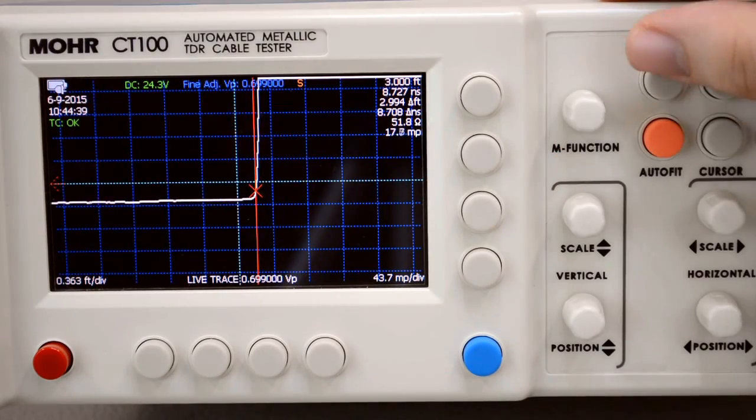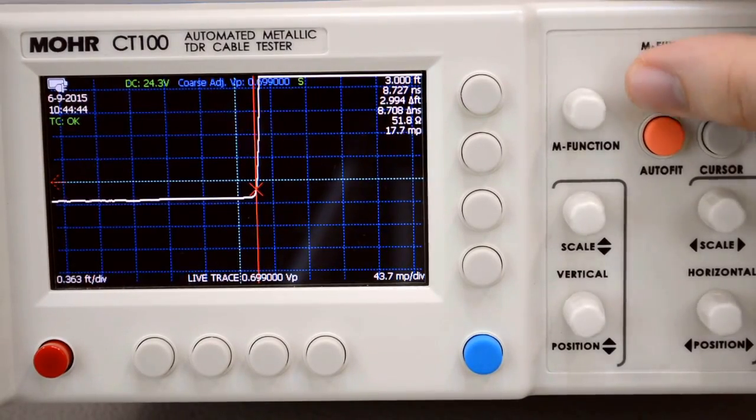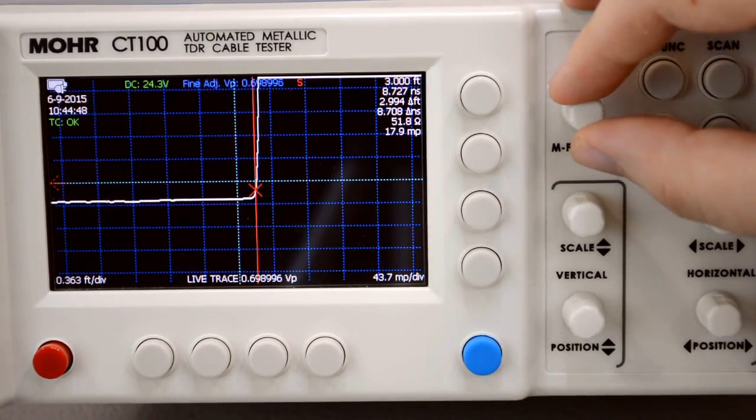If you want to be even more precise you can use fine adjust VP. Simply find that by pressing the multifunction knob once and you can get an even closer reading.